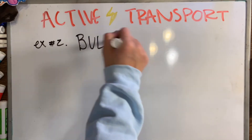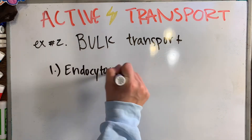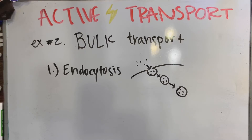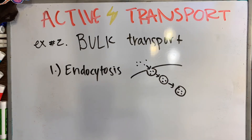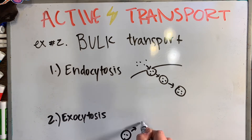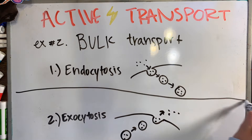Another type of active transport is bulk transport, where proteins, polysaccharides, large molecules, or even entire cells are transported in or out of the cell. In endocytosis, the membrane envelops the molecules and forms a new vesicle as contents move into the cell. In exocytosis, it's the opposite — the vesicles fuse with the membrane and contents are expelled out of the cell.